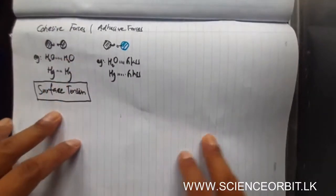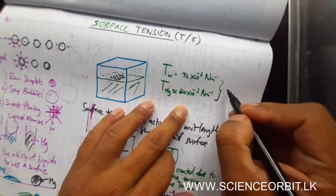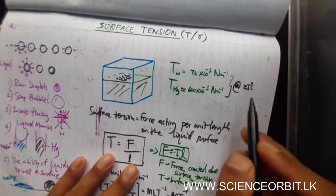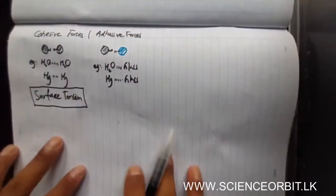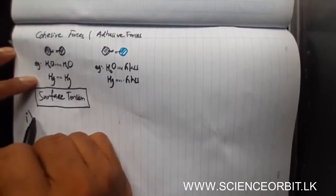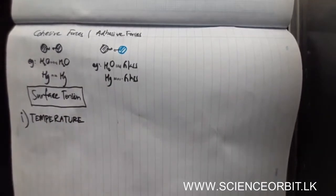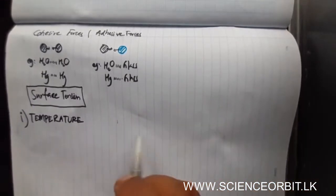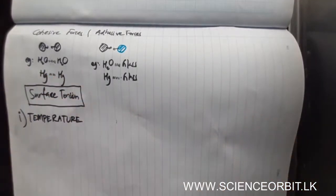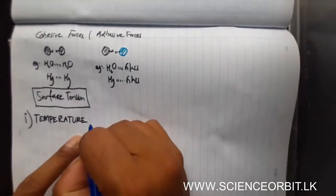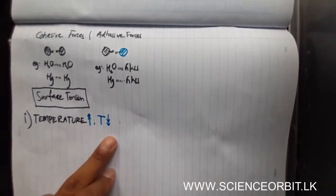Now let us see the factors which affect the surface tension of a particular liquid. Those values for water and mercury were at 25°C. Just like the coefficient of viscosity, surface tension also depends on temperature. The first factor is temperature. When you increase the temperature, the molecules gain energy, have higher kinetic energy, and move faster, so the liquid interactions reduce. Hence, when temperature is increased, surface tension reduces — higher the temperature, lower will be the surface tension.